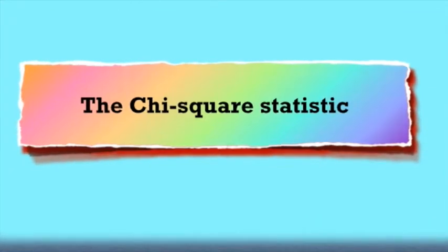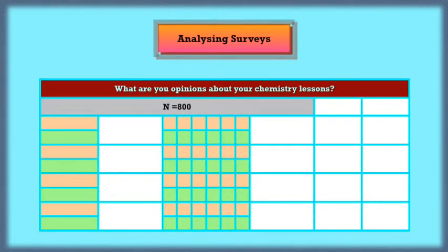We're going to look at the chi-square statistic. Yet again, I'm going to take a survey that was used and has been published. A very large number. And the question was asked, what are your opinions about your chemistry lessons? Now, this 800 students, aged about 17-18, were in two groups.